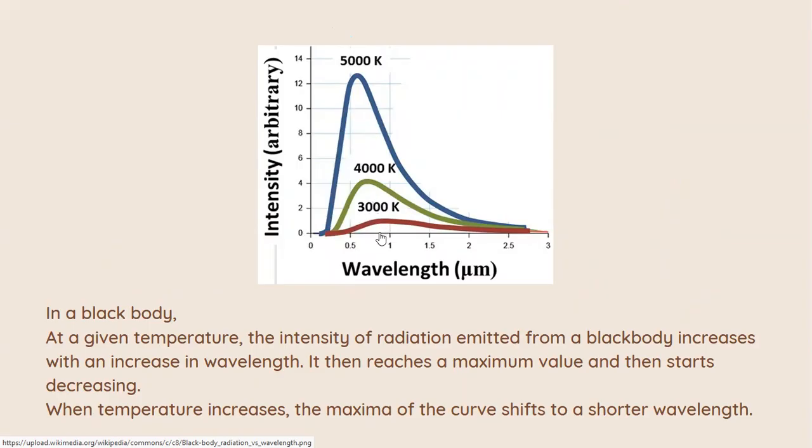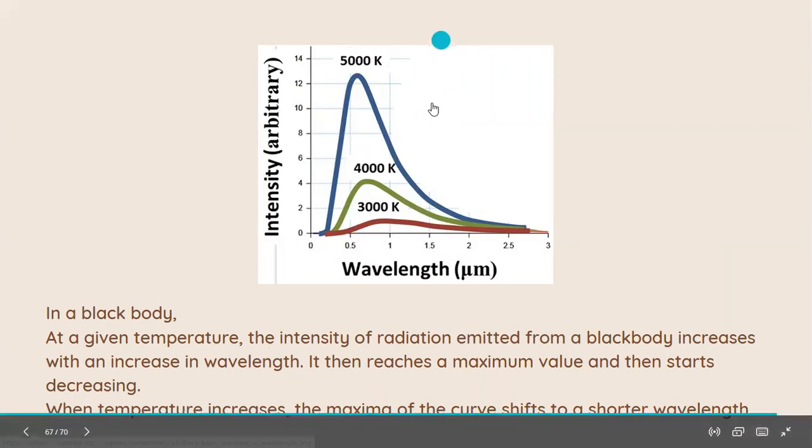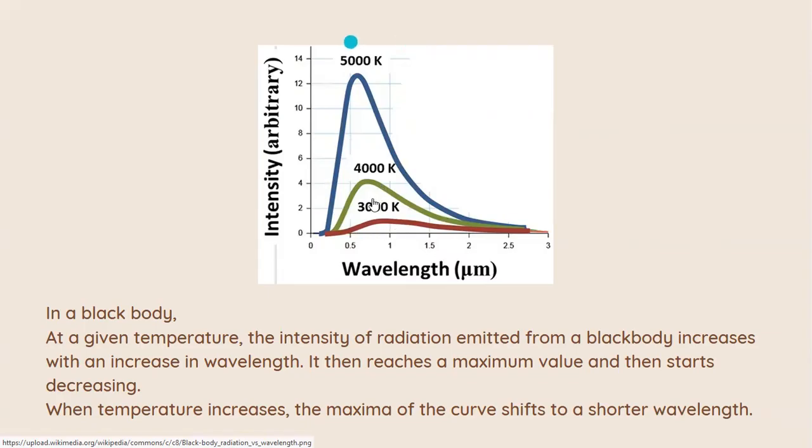For 3000 it's approximately over here, for 4000 it's over here, and for 5000 it's over here. So the maxima is shifting to a shorter wavelength when there is an increase in temperature. But this explanation, as to why there is a decrease in the maxima value or the shorter wavelength of the maxima, was not explained by the electromagnetic wave theory.